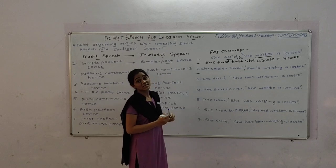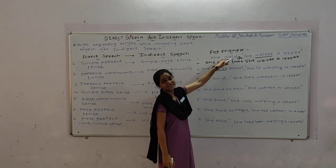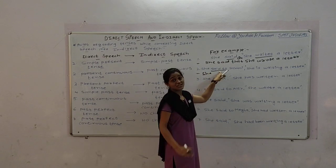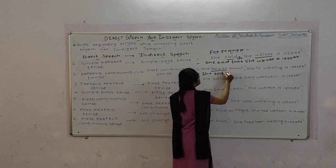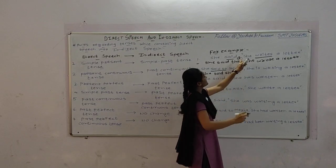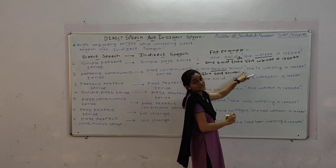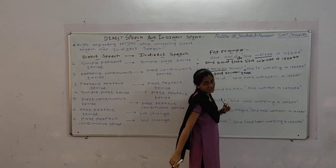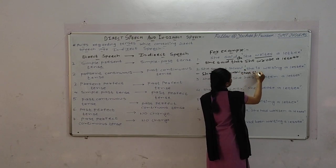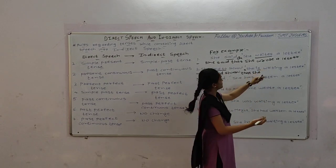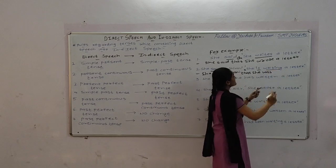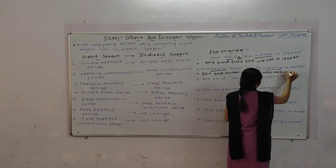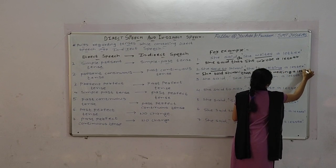Now, the new element in this example is that 'said to' has been given. Here, 'said to' will change into 'told'. She told. The comma in direct speech will be removed and we use the conjunction 'that'. If the verb is in present continuous form, we convert it into past continuous. So 'is writing' becomes 'was writing'. Writing remains the same. She told that she was writing a letter.